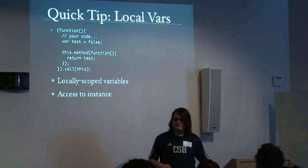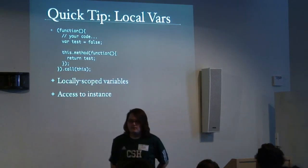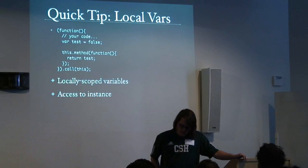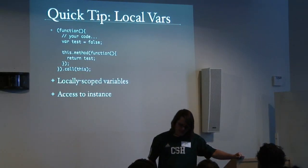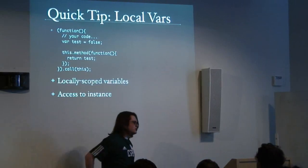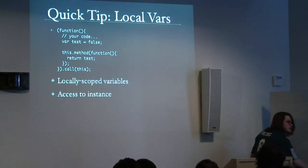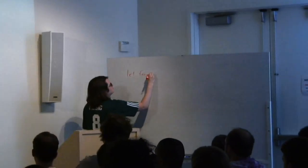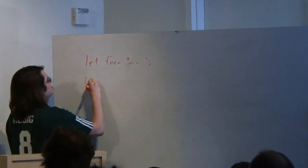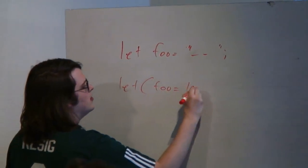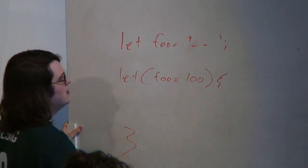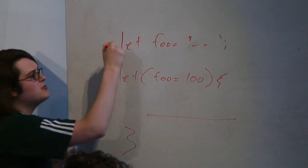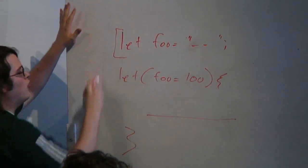Question: does JavaScript 1.7 have an equivalent of f-let for binding in a lexical scope? Yes, in JavaScript 1.7 there's a normal let statement, and you can also do a let block. Within that block the variable will be equal to a certain value — as opposed to a let statement which is scoped to the whole enclosing block.